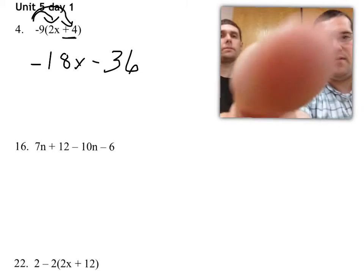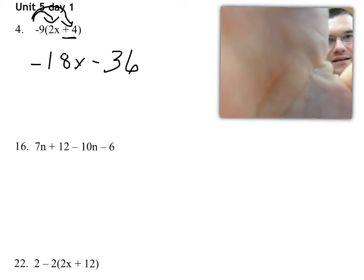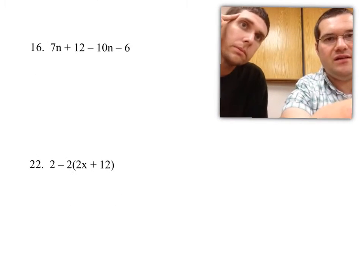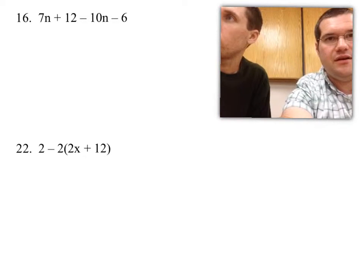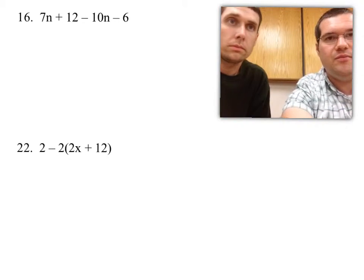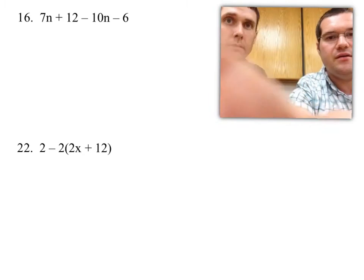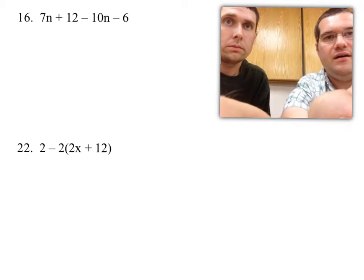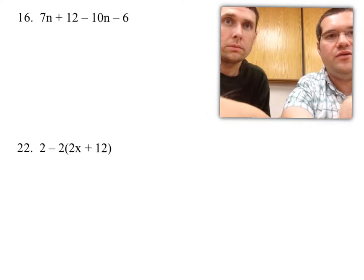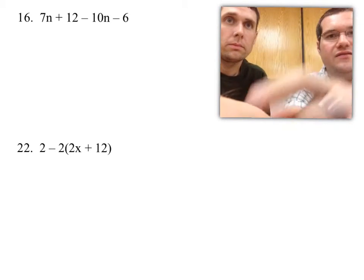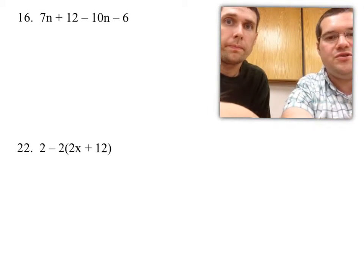Alright guys, for practice problem number 6 on your notes, you can see that there's no distributing, because there's no parentheses. And that's a good indicator that you do not have to distribute. But we do have multiple terms here. We have a 7n, a positive 12, a negative 10n, and a negative 6.